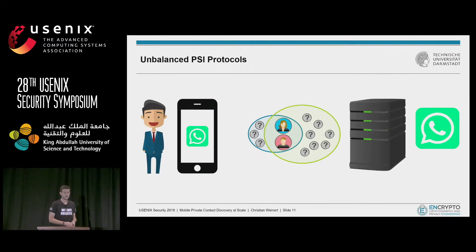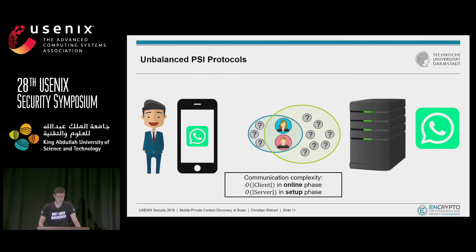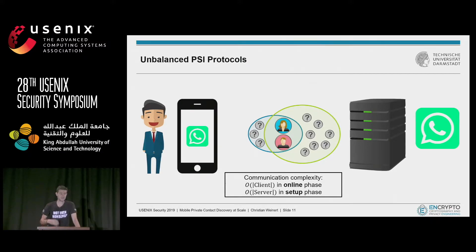Luckily, there are so-called unbalanced PSI protocols designed specifically for the use case where one input set is much larger than the other. These protocols have an online communication complexity that is only linear in the size of the client input set, and they shift the major communication complexity to a setup phase that can be run at an arbitrary point in time before the actual computation and is usually a one-time cost.